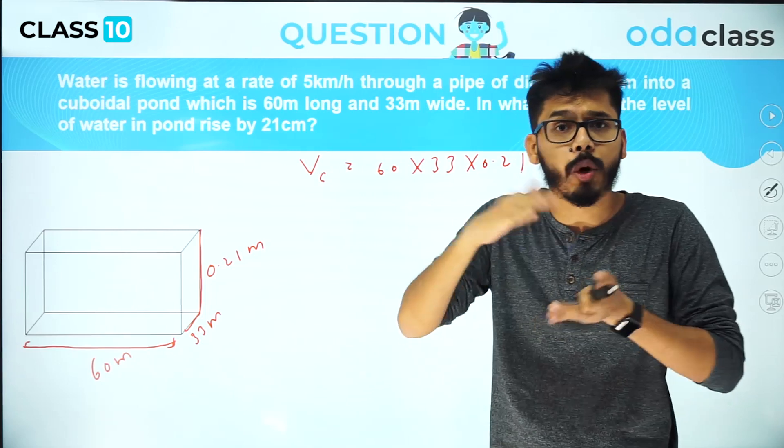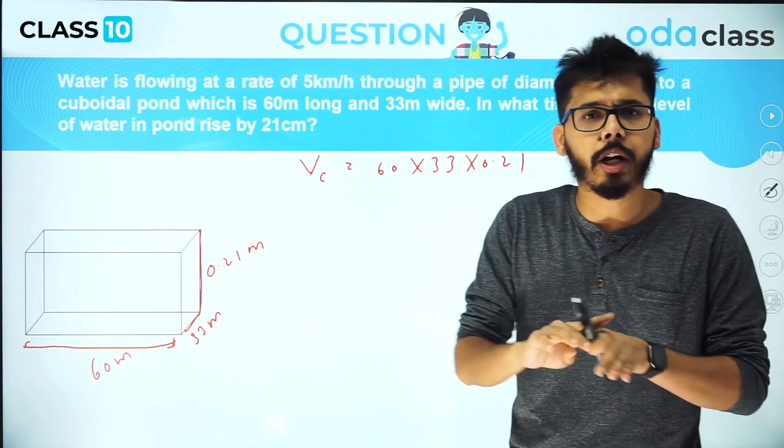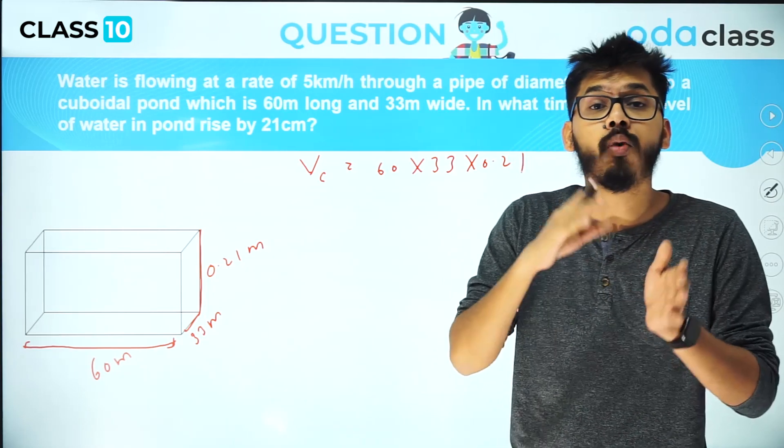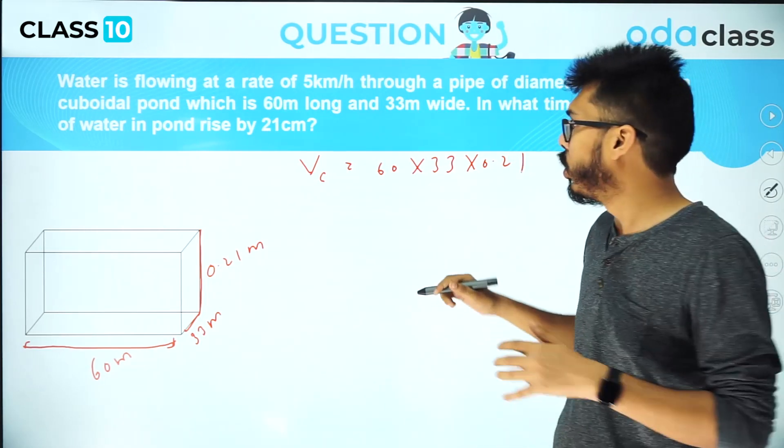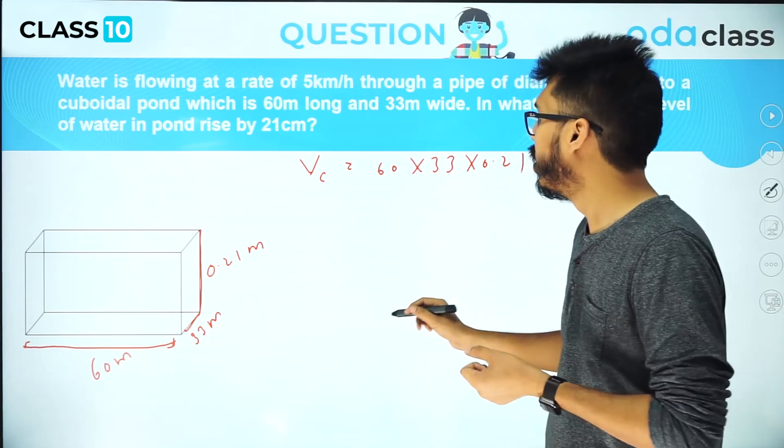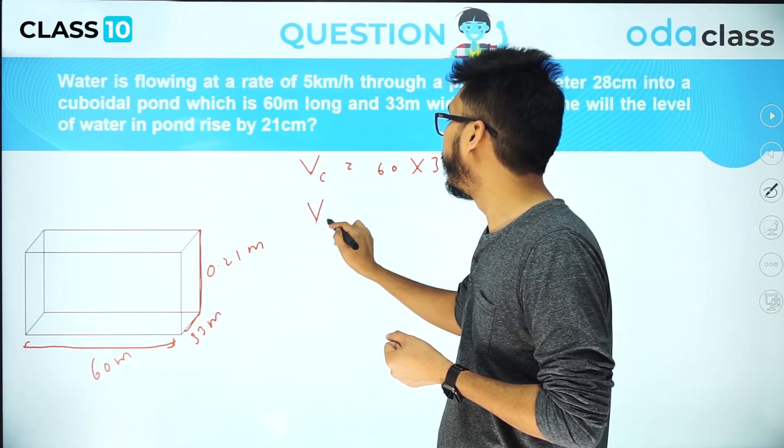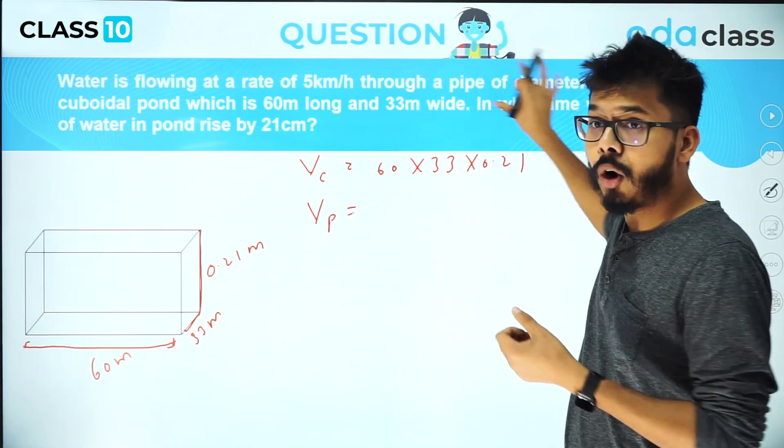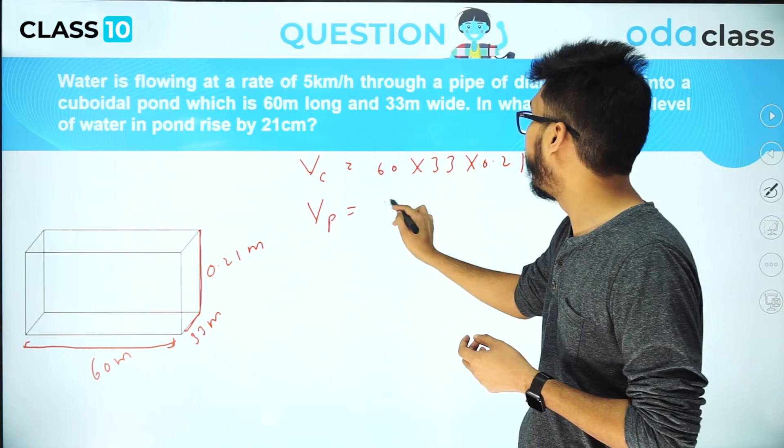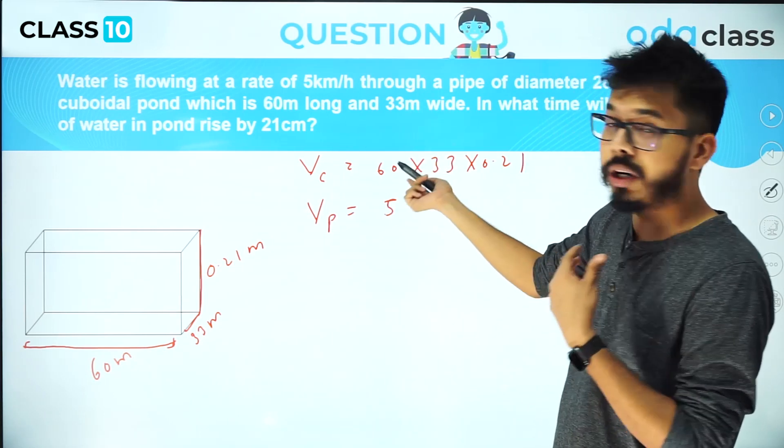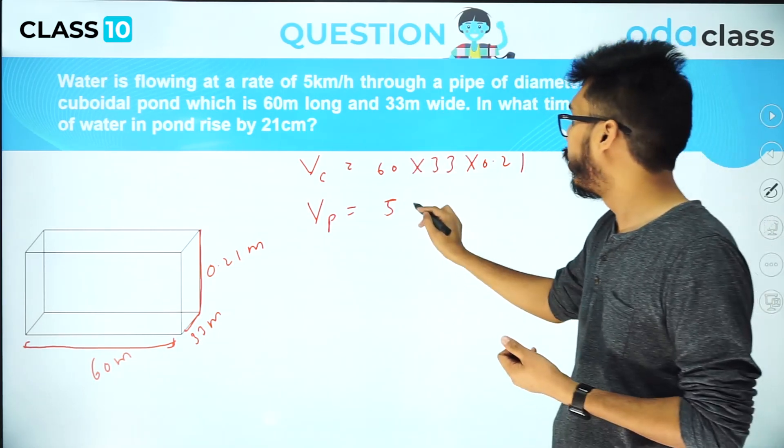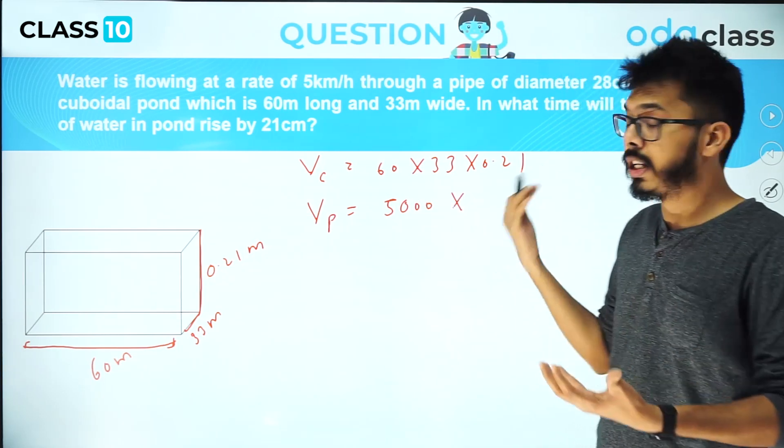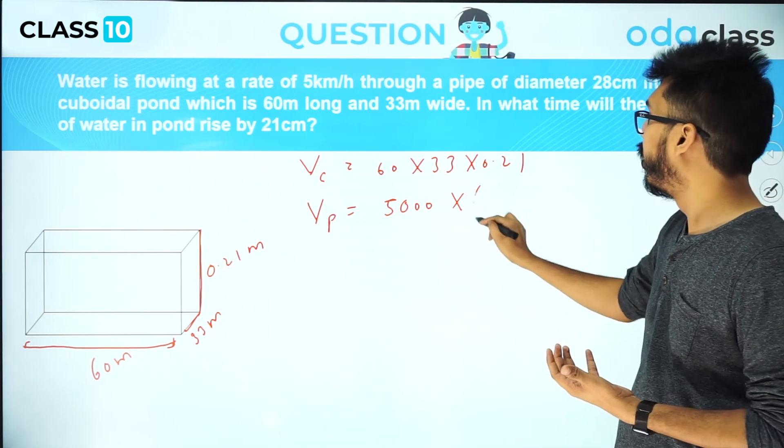The question asks in how much time the whole cuboid will be filled. For board related problems, always assume the time taken is t and then work on the volume produced by the pipe. If I take time as t, volume through pipe Vp will be the rate of volume which is 5 kilometer per hour. I'm converting this to meters, so you get 5000 meter per hour.